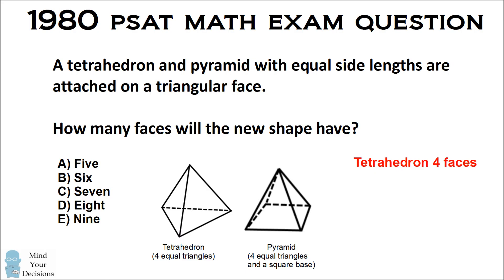Here's how the test makers thought about the question. The tetrahedron has four faces, the pyramid has five. When you glue the two faces together, you lose two faces, so the resulting shape would have 4 plus 5 minus 2, which is 7 faces. And they thought the answer choice was C, 7.